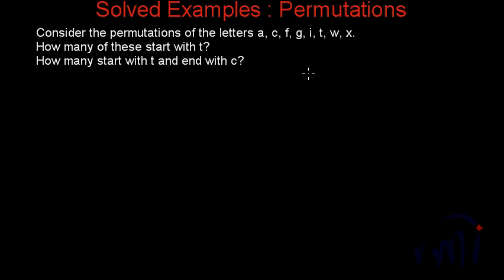So how many number of letters are there? There are actually eight number of letters, and they can be arranged in eight factorial ways. But we have to find how many of these will start with T. So eight letters can be arranged in eight number of places.